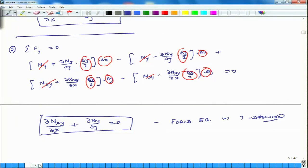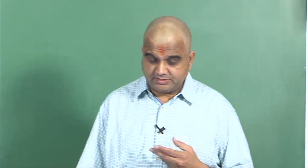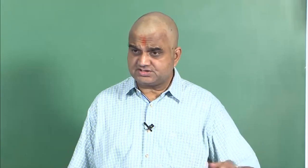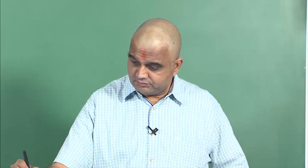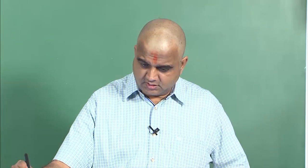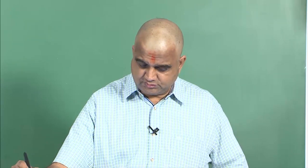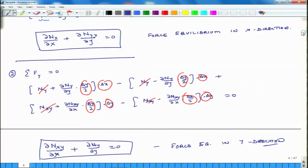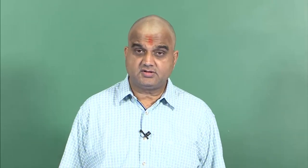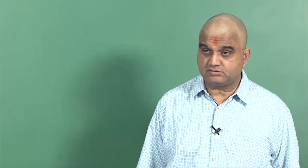The next one is force equilibrium in the z-direction, and that is a little bit tricky — we will start that discussion tomorrow. Today we have just started developing the equilibrium equations for composite laminated plates and derived these two equations: ∂Nx/∂x + ∂Nyx/∂y = 0, and ∂Nxy/∂x + ∂Ny/∂y = 0. These are the two equations of equilibrium related to force equilibrium in x and y directions respectively. That concludes our discussion for today. Tomorrow we will continue and develop the z-direction force equilibrium. Have a great day and I look forward to seeing you tomorrow.